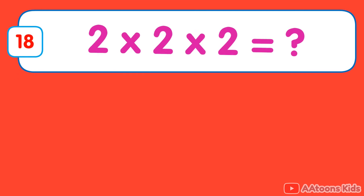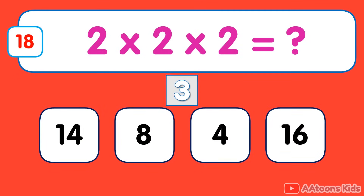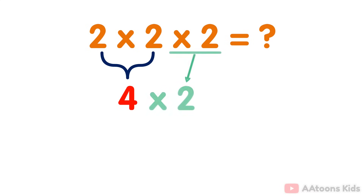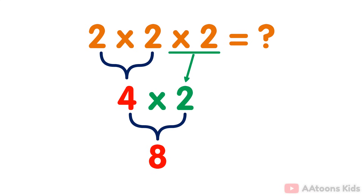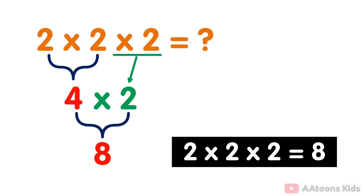2 multiplied by 2 multiplied by 2. The answer is 8. Simply multiply the numbers 2 and 2 which equals 4. Then you multiply the result 4 by 2. You will get 8. Therefore the answer to 2 multiplied by 2 multiplied by 2 is 8.